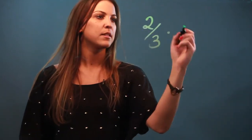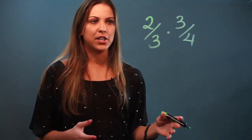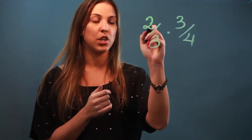So let's do two-thirds times three-fourths. When you're multiplying fractions, the denominators don't have to be the same like they do when you're adding. It doesn't matter. All we're going to do is numerator times numerator and denominator times denominator.